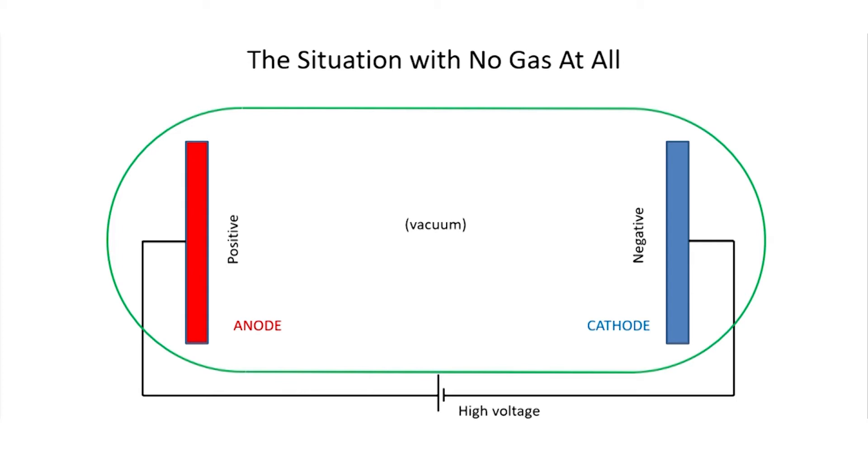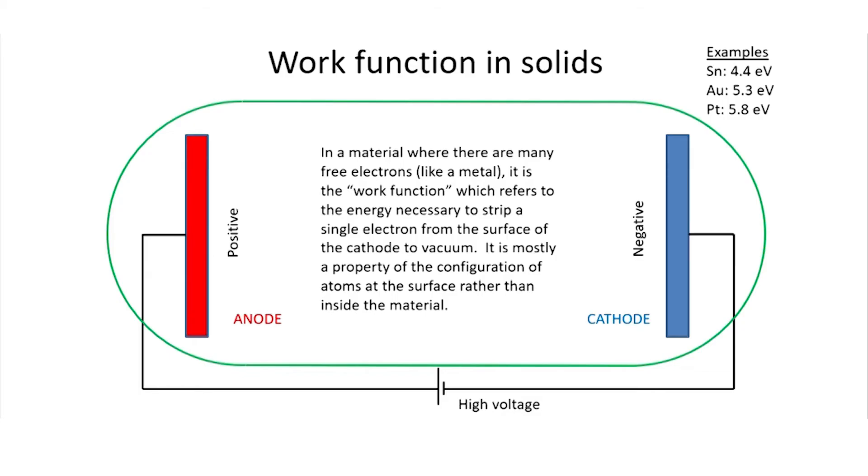This will definitely depend on the type of metal used in the cathode. So you can start imagining the particular situation in this diagram, that in order to get a current to start flowing, the voltage necessary will depend on whether the cathode is made of, say, tin or gold or platinum, for instance. It turns out that it's easier to strip off electrons from tin than it is for gold, and it's easier to strip them off of gold than it is for platinum.